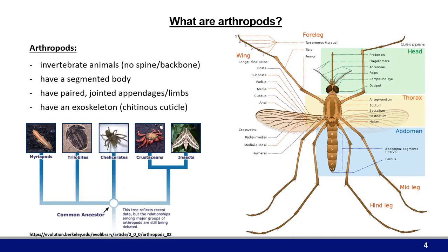The next main question is: what are arthropods? Arthropods are invertebrate animals that have a segmented body — meaning they have the head, thorax, and abdomen, and the abdomen is segmented as well. They also have paired joint appendages, such as legs and wings in the case of mosquitoes. Their overall body structure, from a developmental point of view, is not all that different from us. However, arthropods do have an exoskeleton, which is usually formed out of a chitinous cuticle.